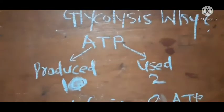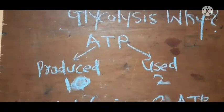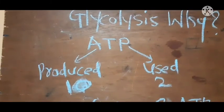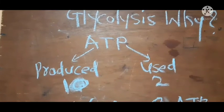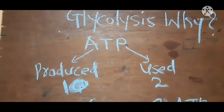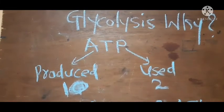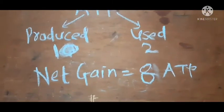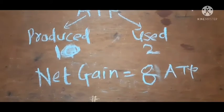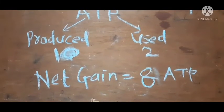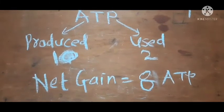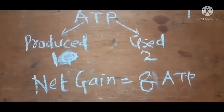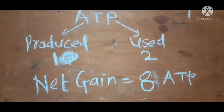During glycolysis process, total ATP produced are 10. Two ATPs are used during the chain of reactions, and the cell gains 8 total ATP after carrying out the glycolysis process.